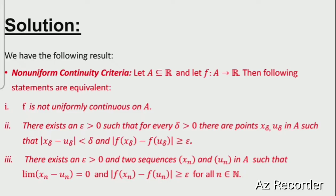This is also equivalent to: there exists an epsilon greater than 0 and two sequences (x_n) and (u_n) in A such that the limit of x_n - u_n equals 0, and |f(x_n) - f(u_n)| ≥ epsilon for all n in ℕ. All three statements are equivalent. To see which function is not uniformly continuous, we will use this criteria.